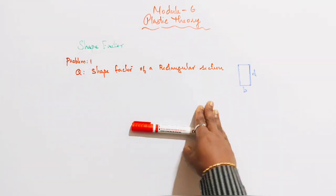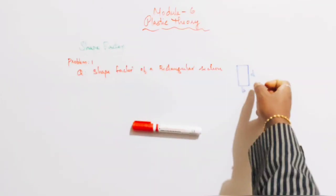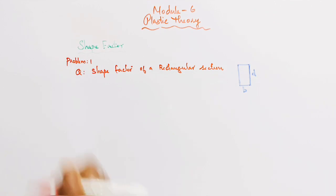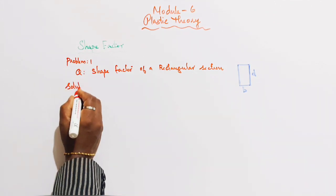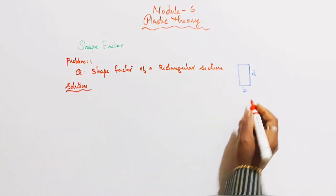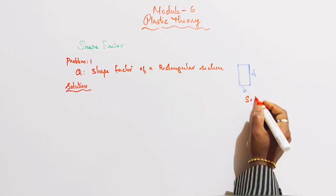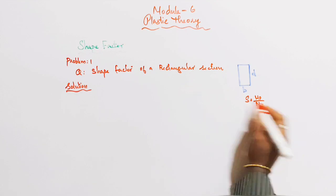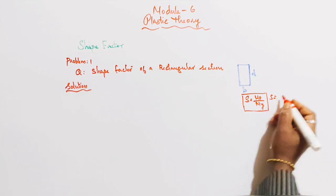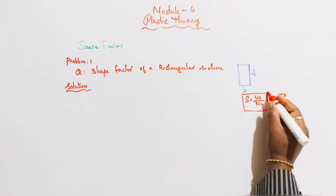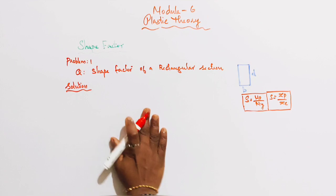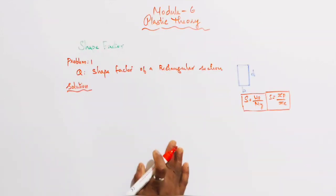To find out the shape factor of a rectangular section, here is the rectangular cross section, breadth B and depth D. Solution. First step, we know that Shape Factor S equals Mp by My. Plastic Moment divided by Yield Moment. Or S is equal to Zp by Ze. Plastic Modulus by Elastic Modulus. We use this equation for Rectangular Section to find out Shape Factor.